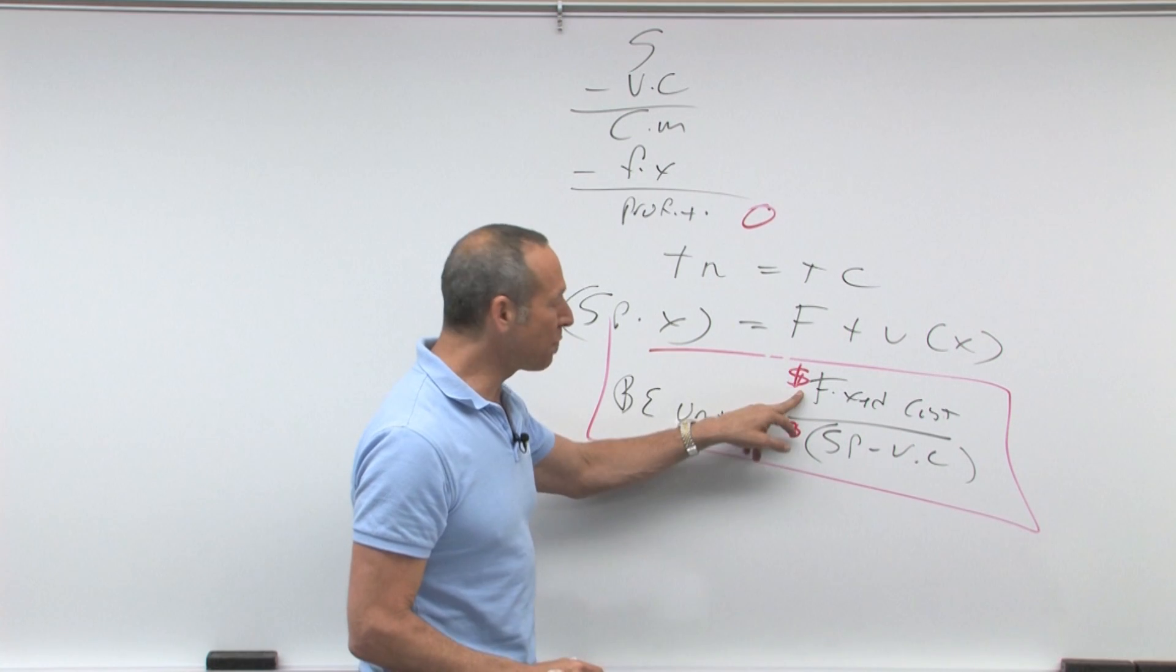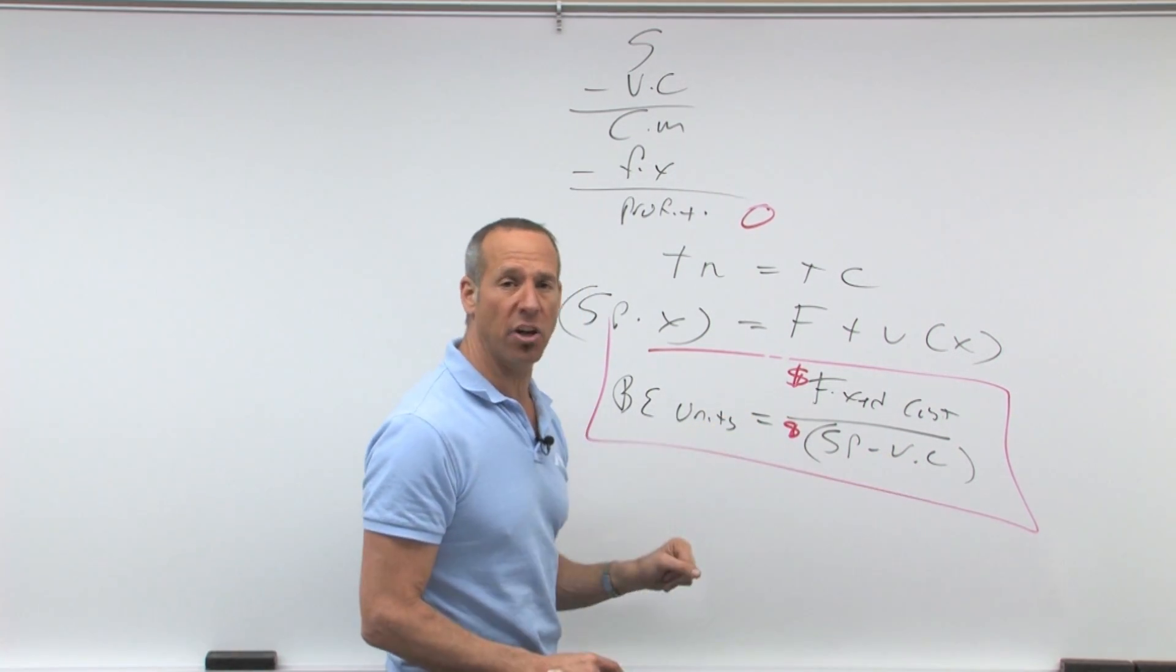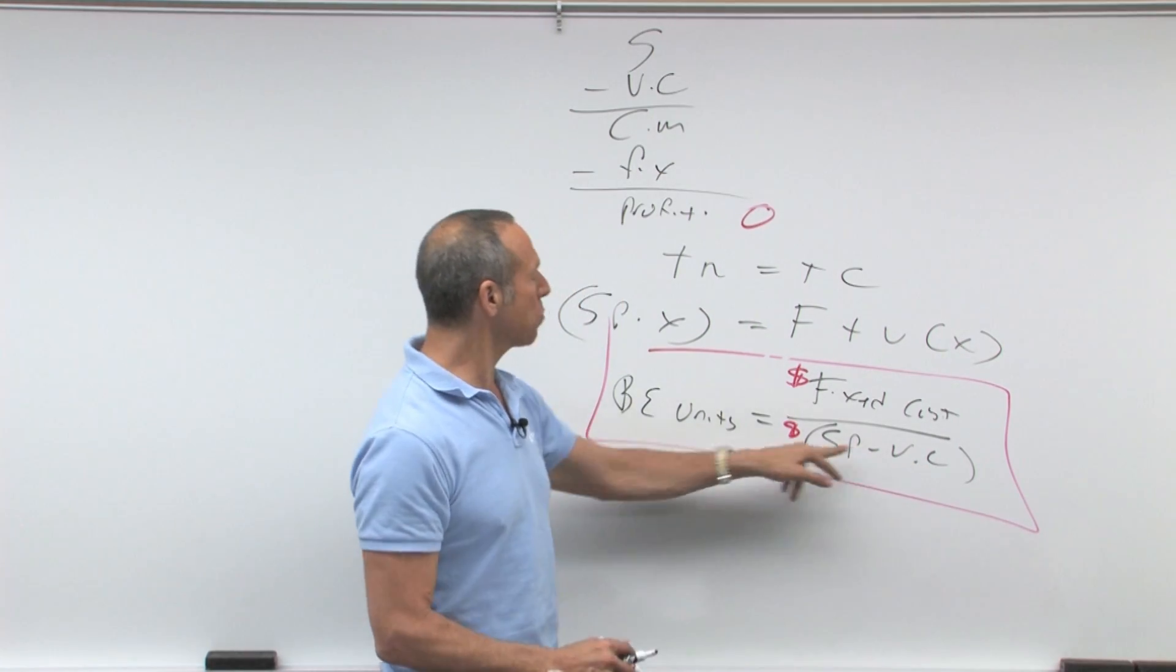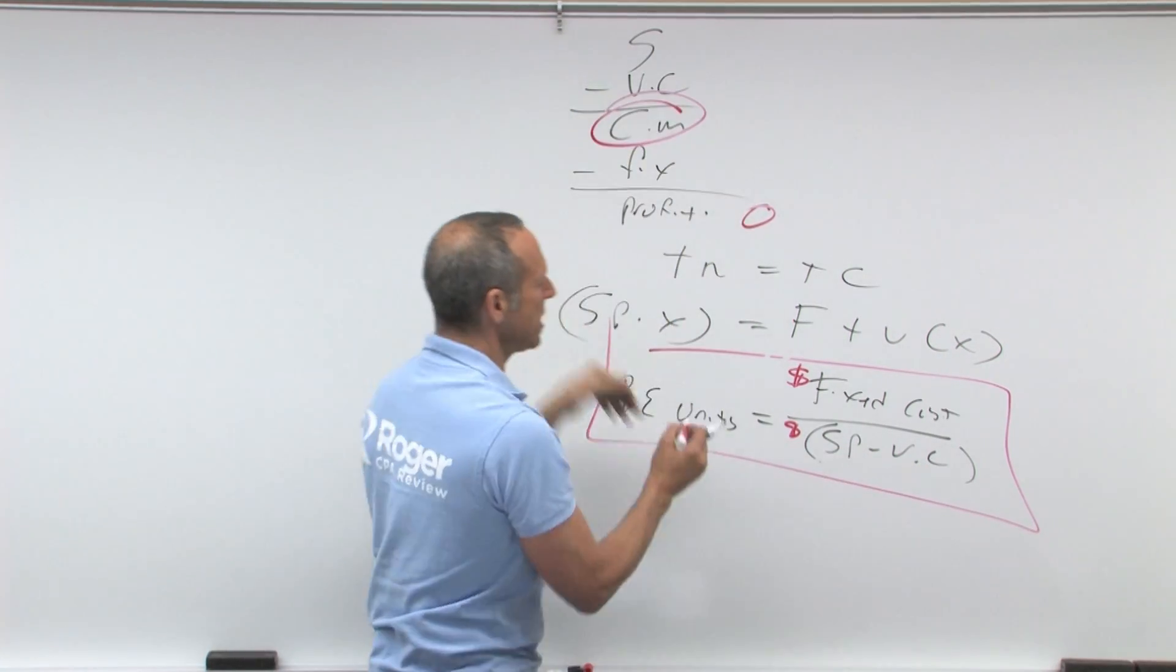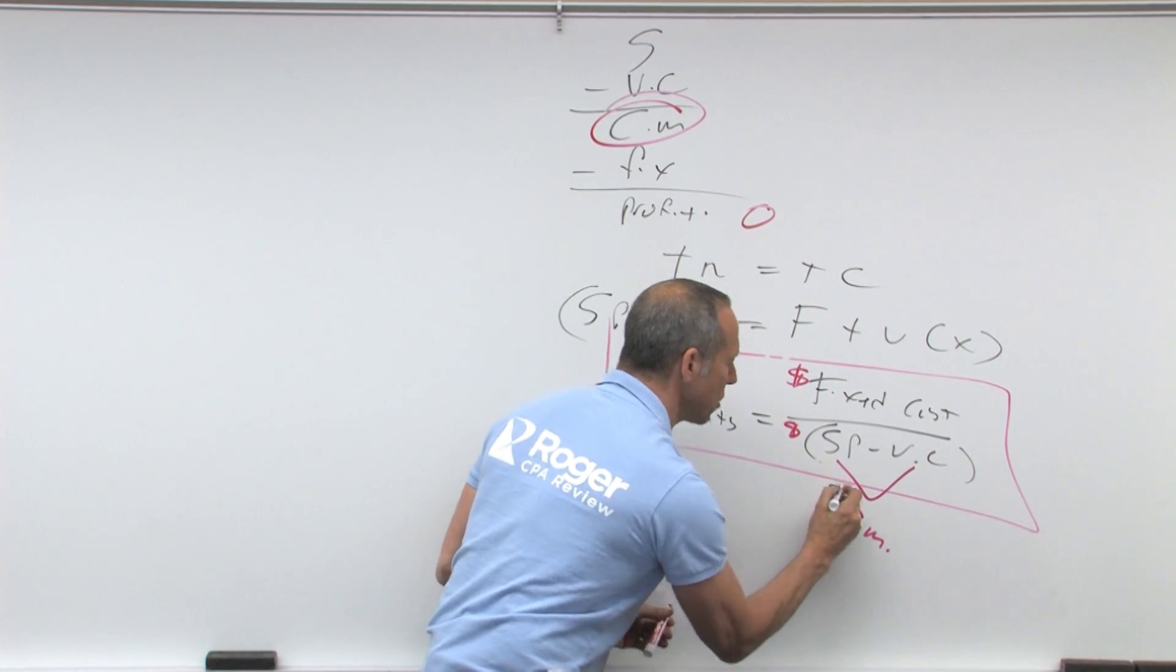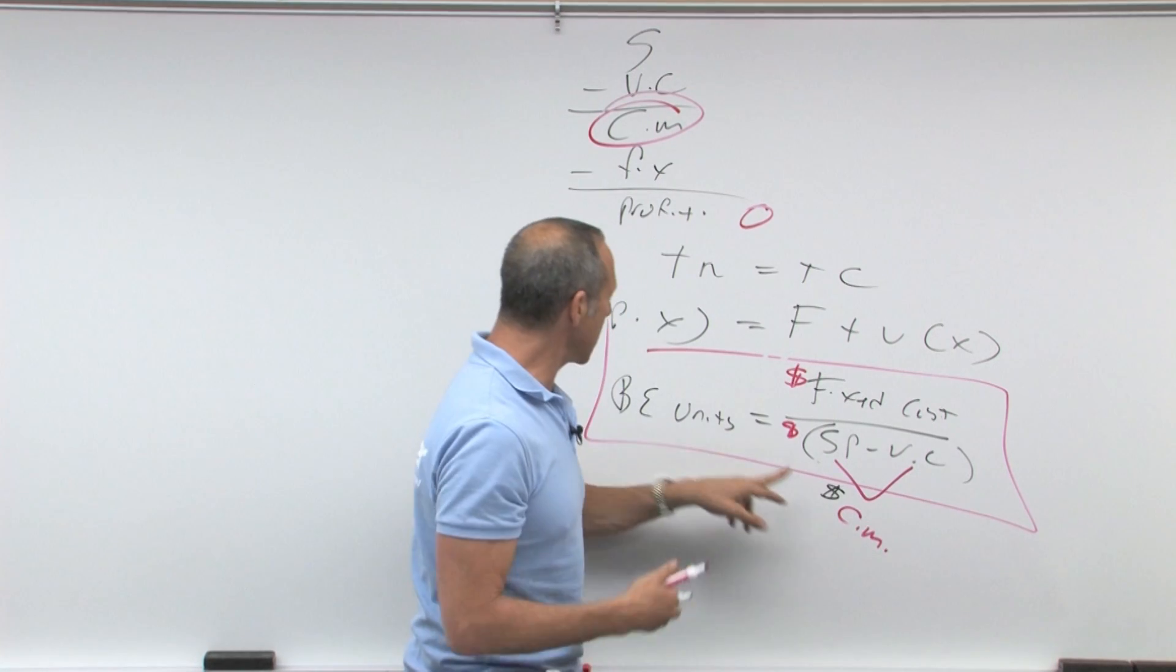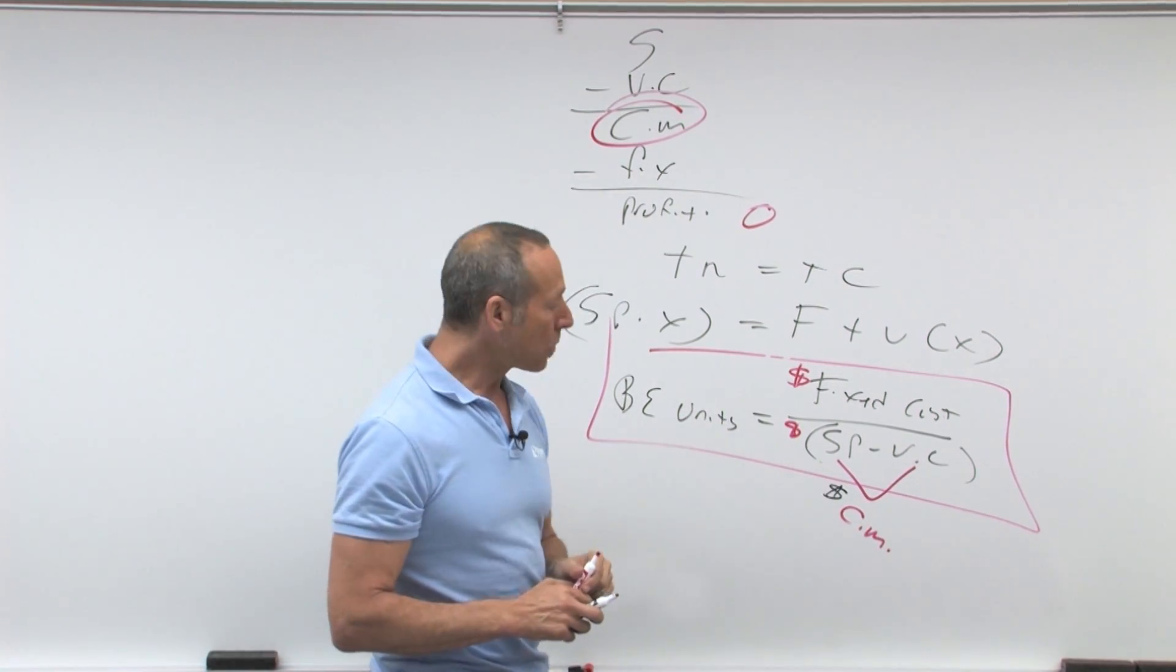So breakeven in units is fixed dollars, fixed costs, divided by sales price minus variable cost. Now, what do we call sales price minus variable cost? How about CM, contribution margin? So that's going to be the contribution margin per unit, fixed cost in total, contribution margin per unit equals breakeven in units.